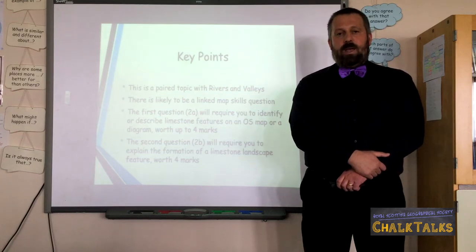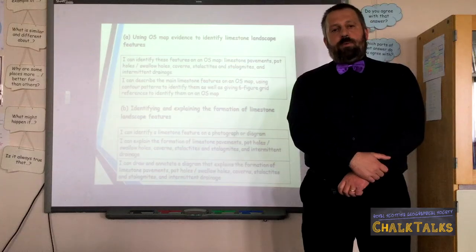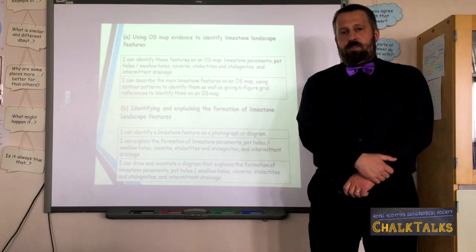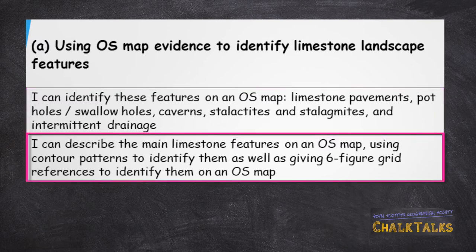So let's have a look at our learning outcomes for this video. I've grouped our learning outcomes around the two parts of the question. For Part A, you will need to be able to identify the following features on an Ordnance Survey map: limestone pavements, potholes and swallow holes, caverns, stalactites and stalagmites, and intermittent drainage. You'll also need to be able to describe the main limestone features from an Ordnance Survey map, identifying them by their contour patterns, and giving accurate six-figure grid references to locate them on the map.